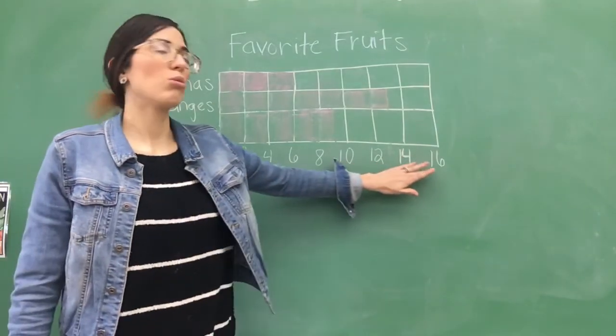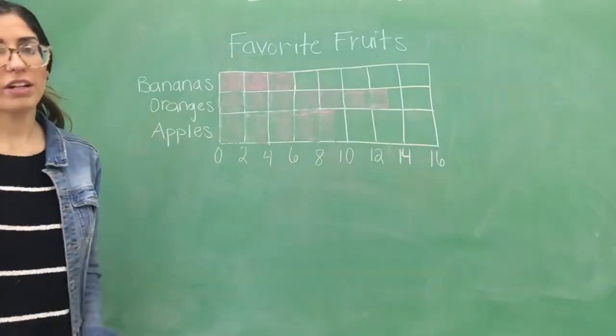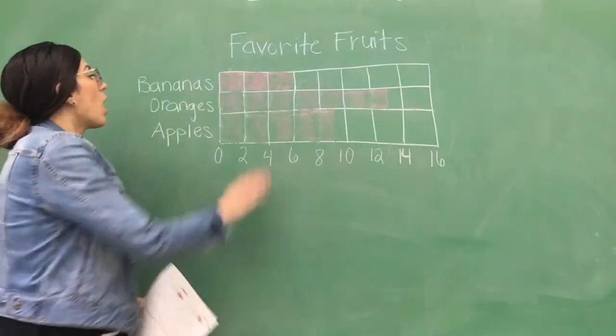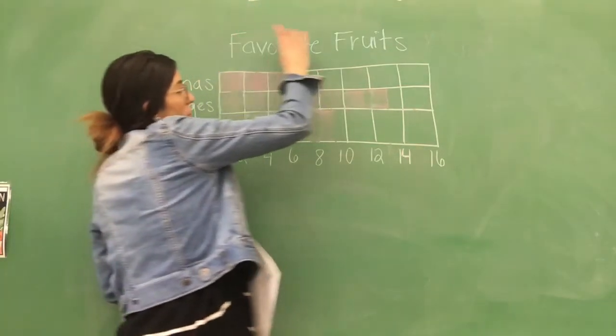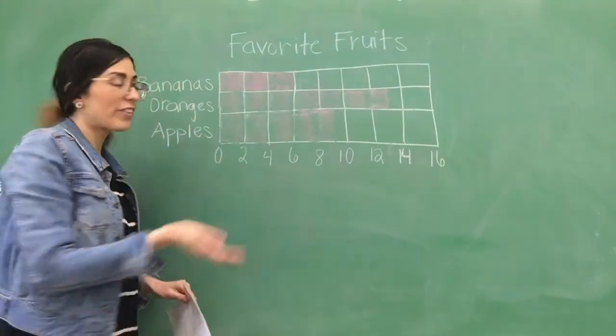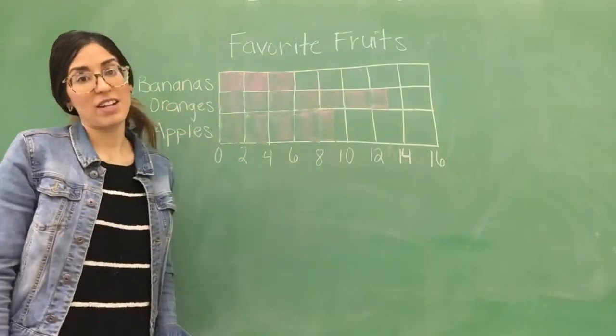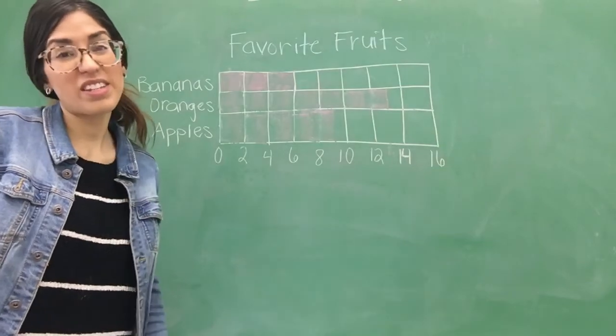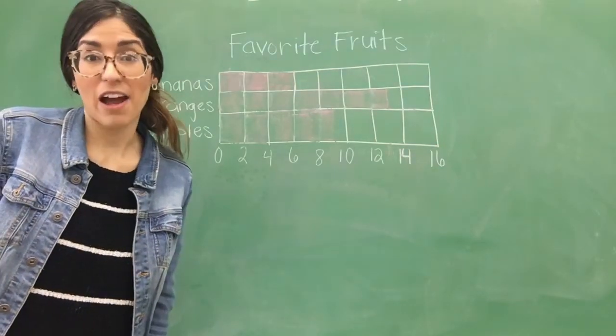Like, this is by twos, right? Counting by twos. Very good. And so, again, and then you always want to read your title in the graph. And then, you have your items listed on the left side. And that's what a graph is. It's so easy. Don't be scared of graphs. They're so easy, second grade, okay?